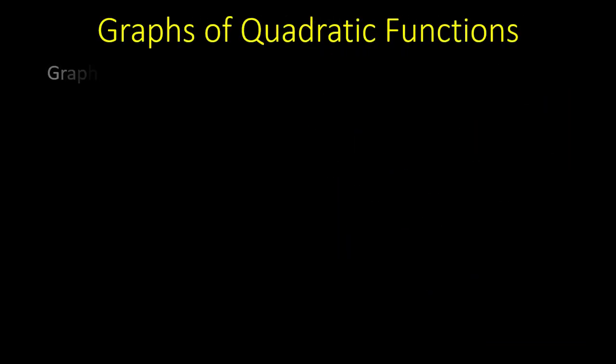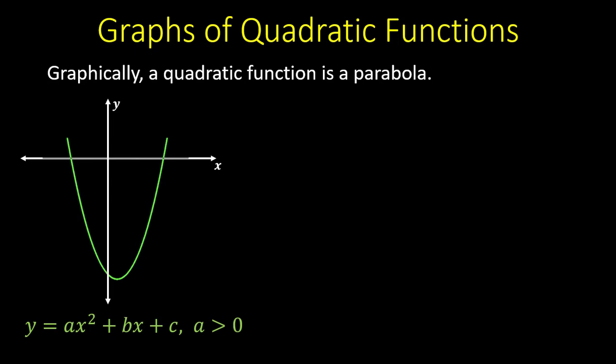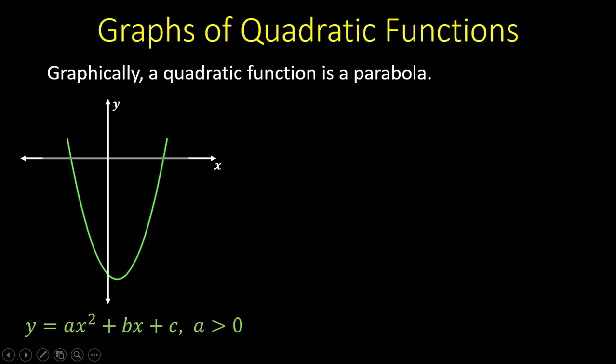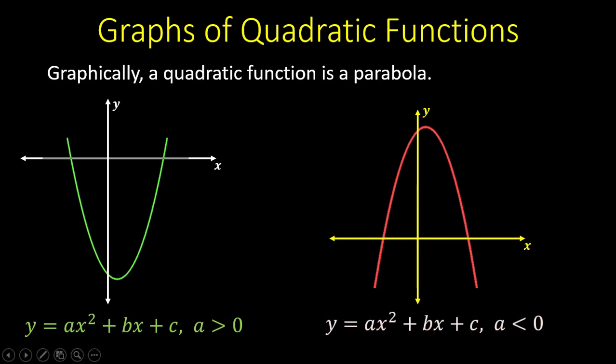Graphically, a quadratic function is a parabola. It may open upward when the coefficient of x squared is greater than zero — when a is greater than zero, the parabola opens upward and has a minimum point. It may also open downward, but in that case the coefficient of x squared must be negative, meaning a must be less than zero. That is basically how a quadratic function behaves graphically with respect to a, b, and c.